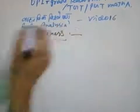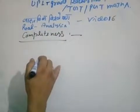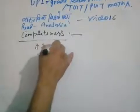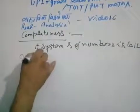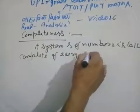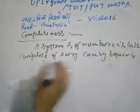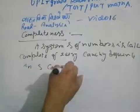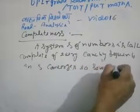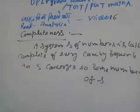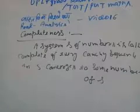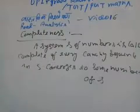What is completeness? A system S of numbers is called complete if every Cauchy sequence in S converges to some number of S. That is, a system S of numbers is called complete if every Cauchy sequence in S converges to some number of S.